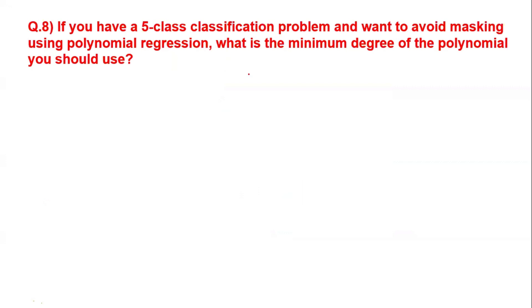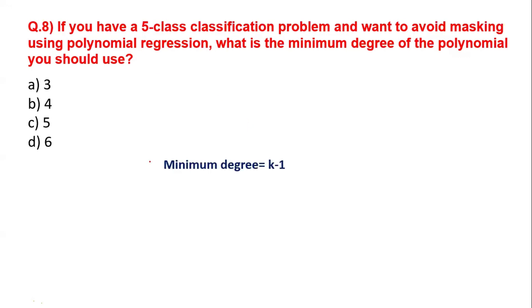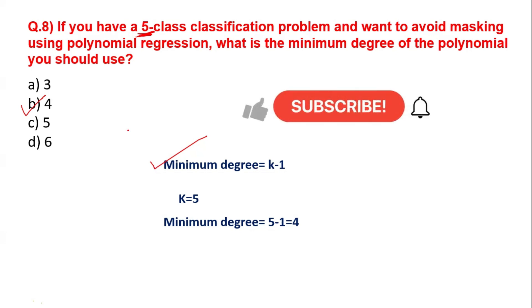Question number eight: if you have a five-class classification problem and want to avoid masking using polynomial regression, what is the minimum degree of polynomial you should use? The formula to remember is: minimum degree = k − 1, where k is the number of classes. Here k = 5, so 5 − 1 = 4. Option B is our answer. This is the last question of today's session.